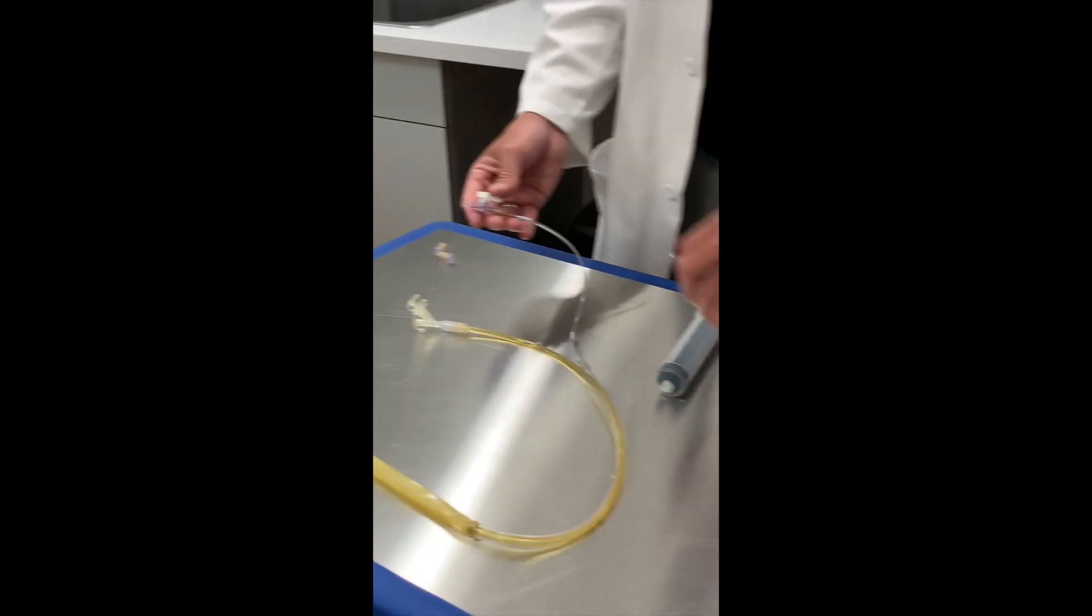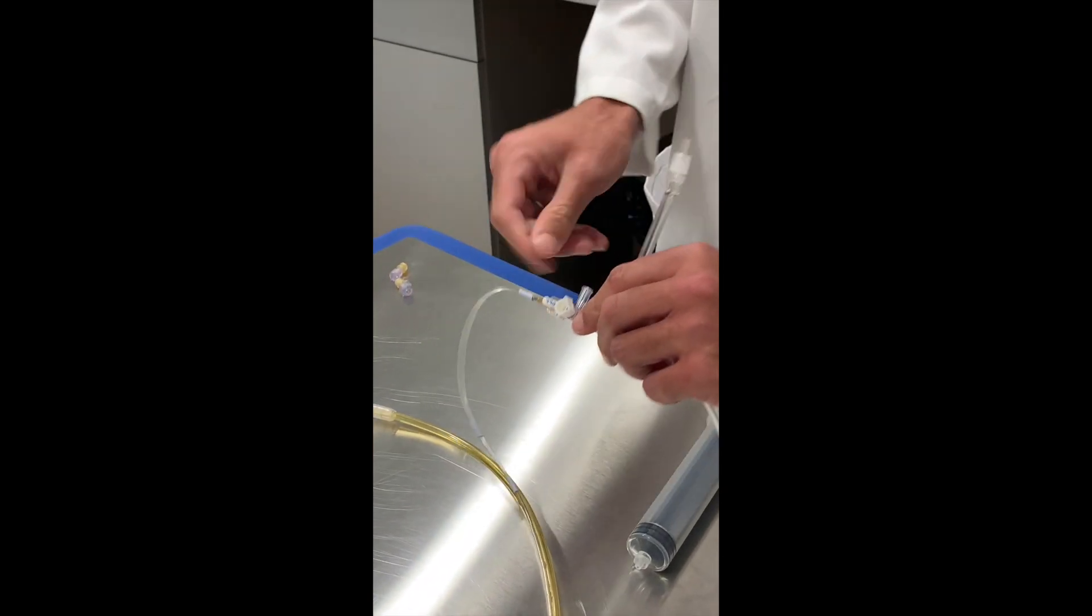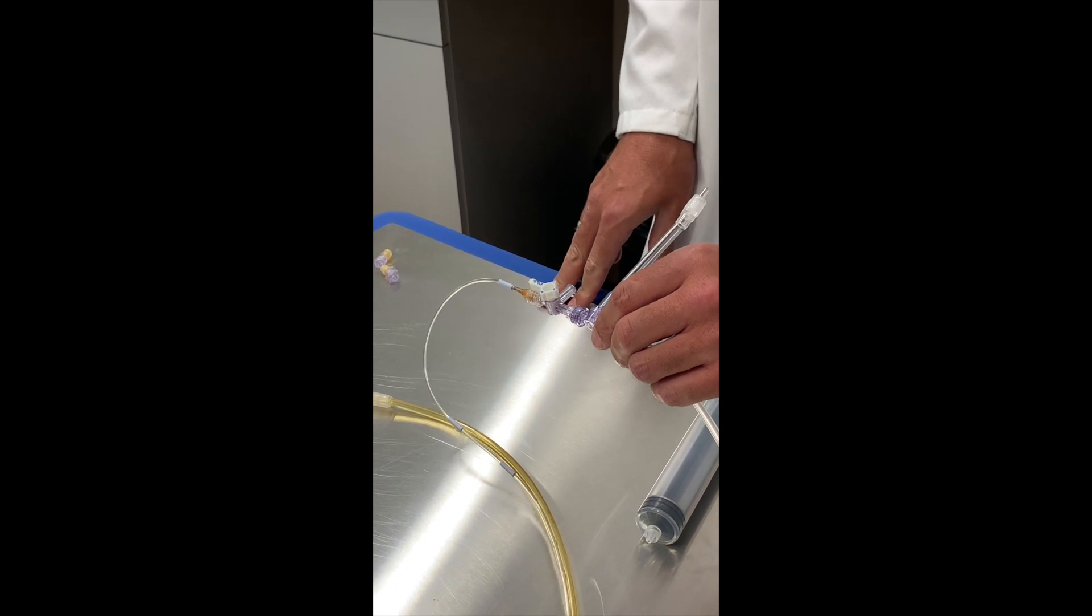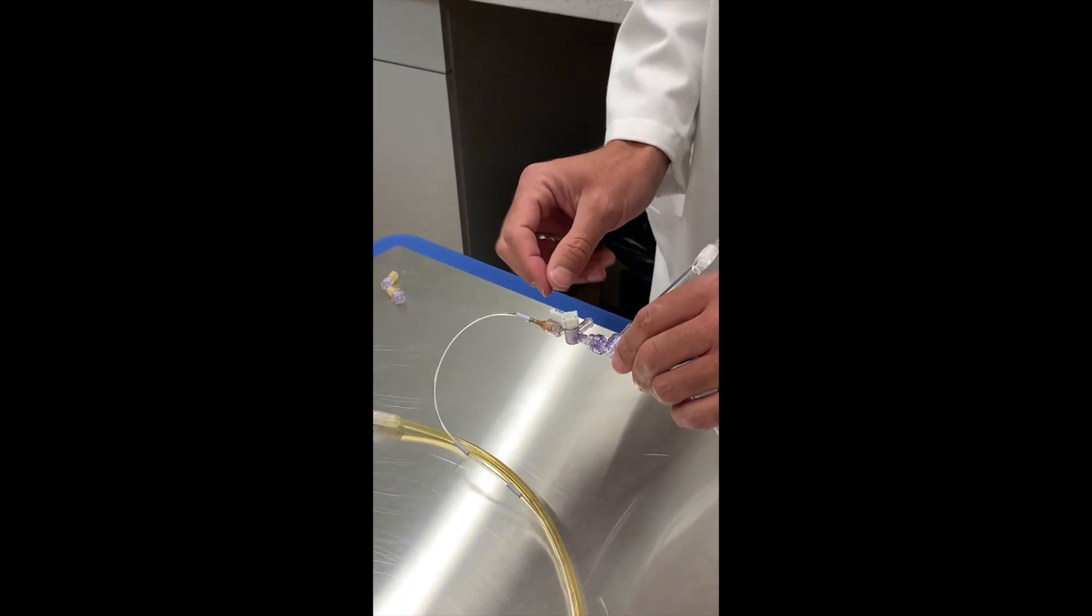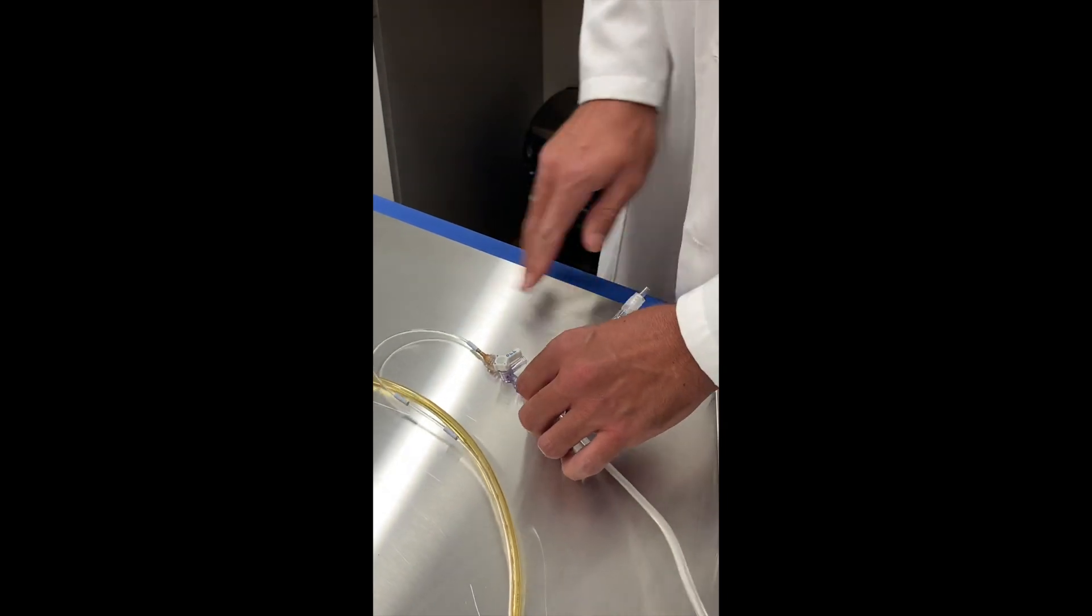The next thing we do is hook up the inflation device opposite the patient. Then we turn off to atmosphere because we're now ready to do the inflations.